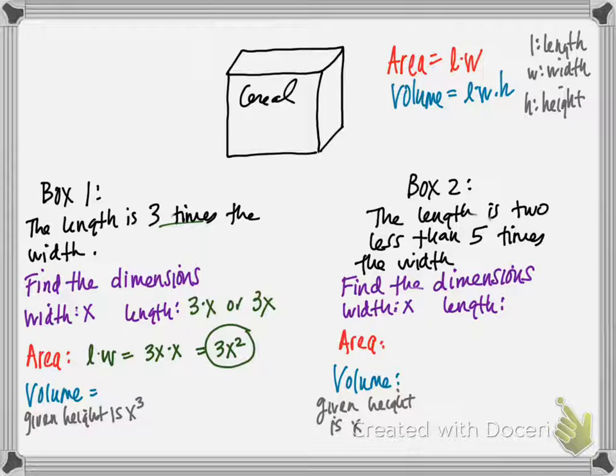So the volume is length times width times height, and they give me the height is x to the third. And I already know what length times width is because that was the area. So length times width here is 3x squared, and then I'm multiplying that by x to the third because that's our height. So I know 3x squared times x to the third is 3x to the fifth. I add the exponents because they have the same base.